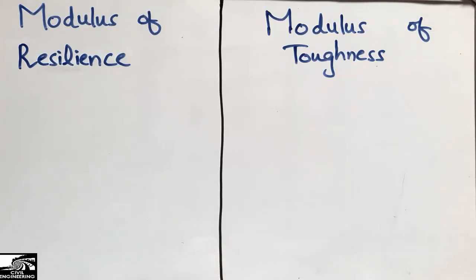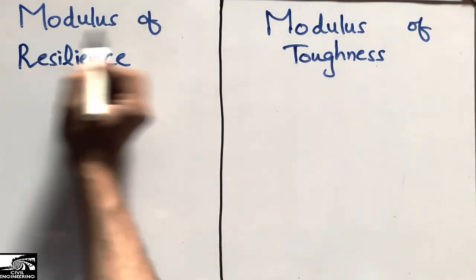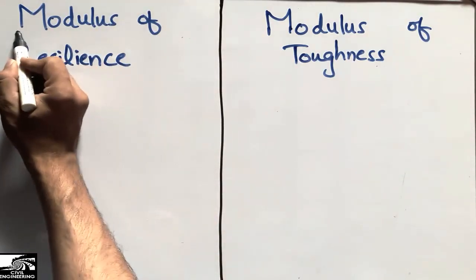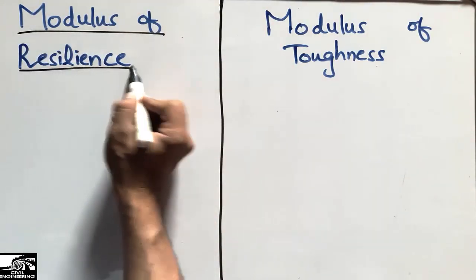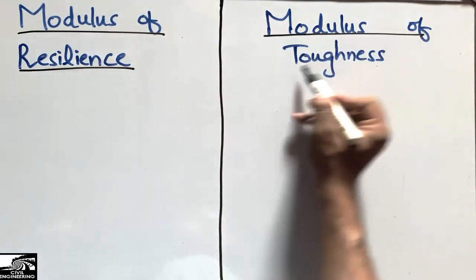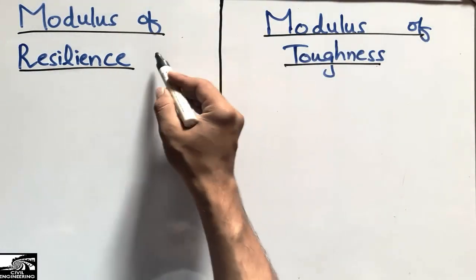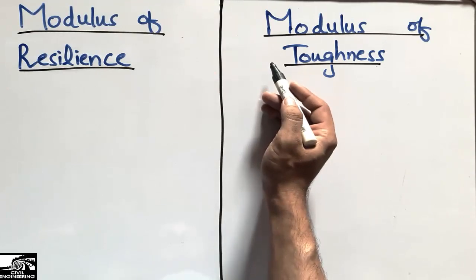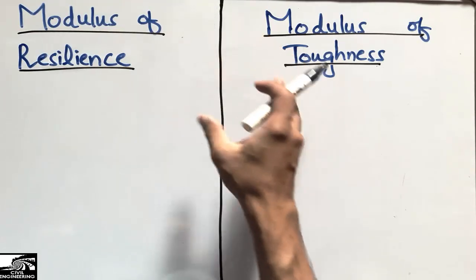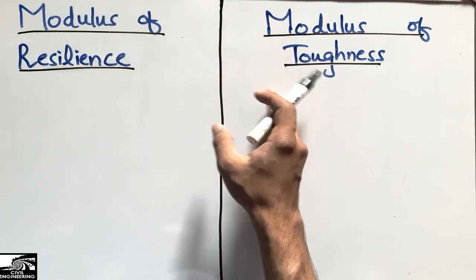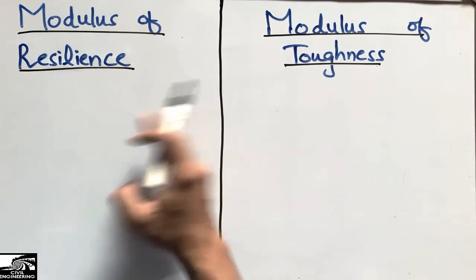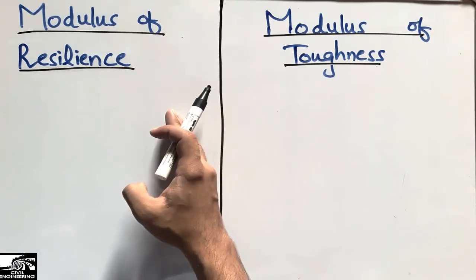Hello guys, welcome back to the Civil Engineering YouTube channel. Subscribe to our channel for daily civil engineering videos. Today our lecture is about the difference between the modulus of resilience and the modulus of toughness — these are two different mechanical properties of any material.